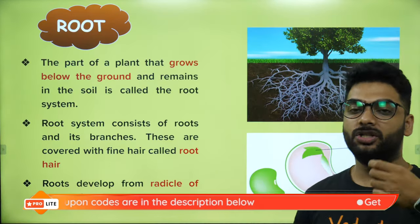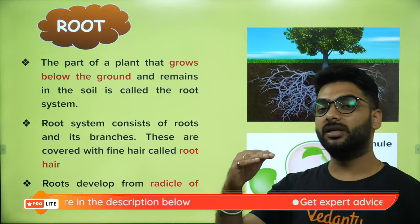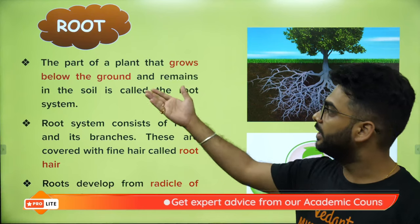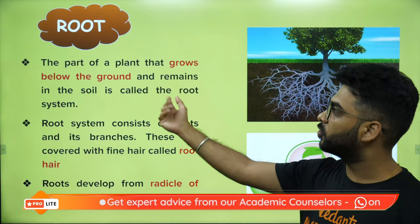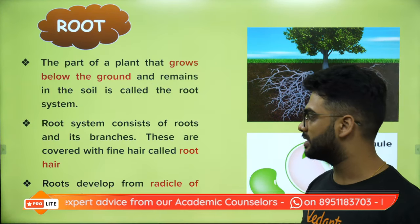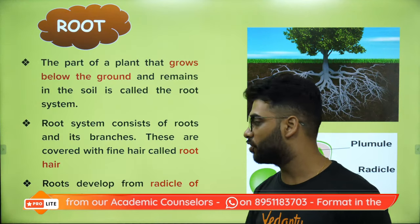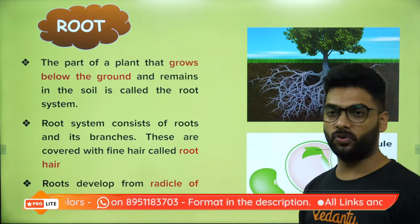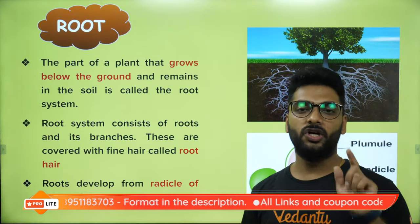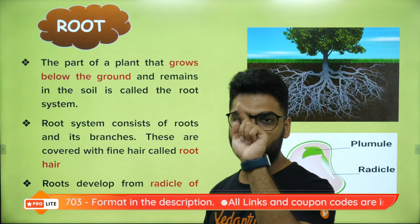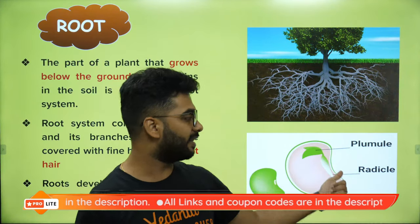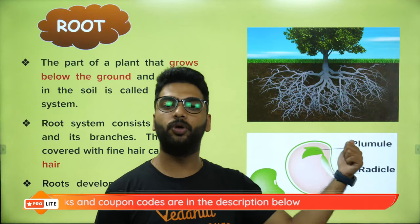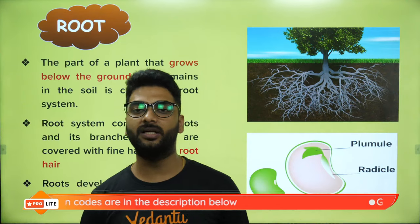When a seed germinates, it produces the radicle and the plumule. The radicle — R for radicle, R for root — goes below the ground forming the roots, which are of two types: tap root and fibrous root. The plumule goes above the ground forming the shoot.